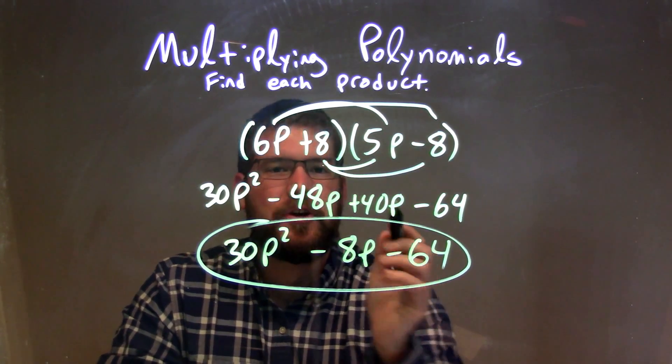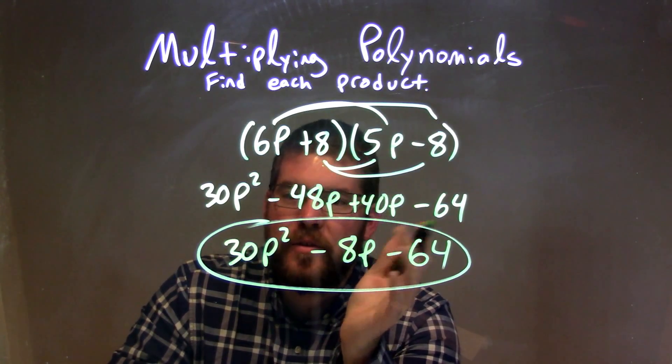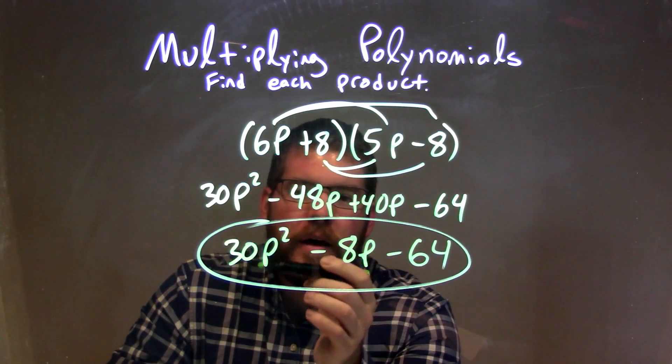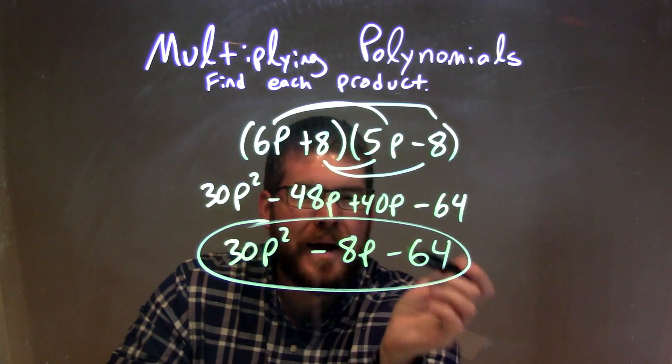Then from there we combine the like terms. Negative 48p plus 40p was negative 8p, and that's the only two terms that were like terms we can combine. So now we have our final answer here of 30p squared minus 8p minus 64.